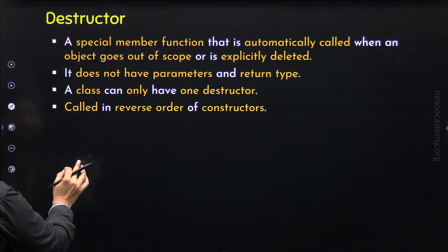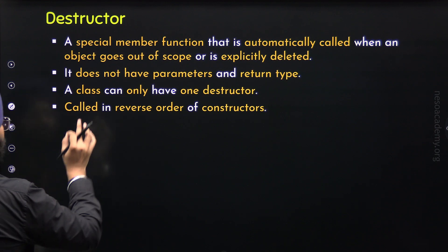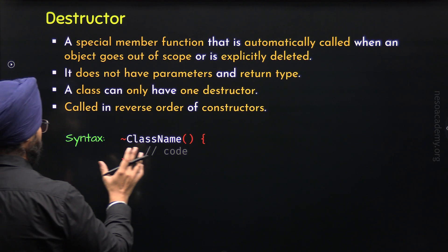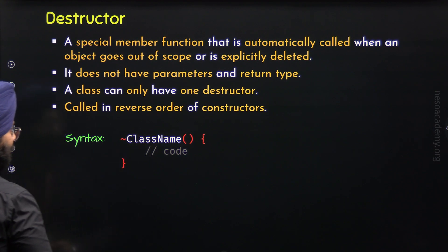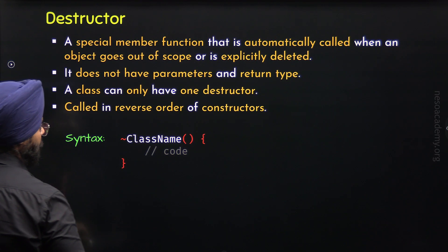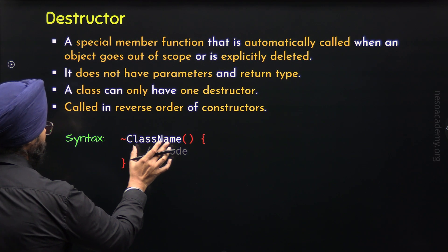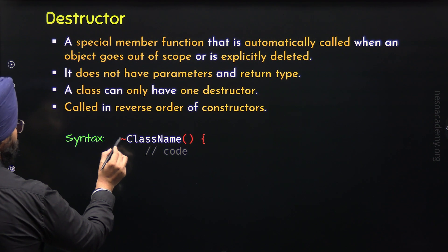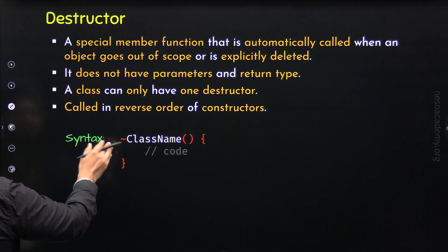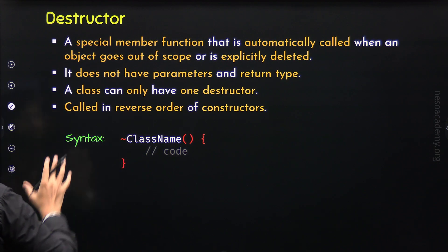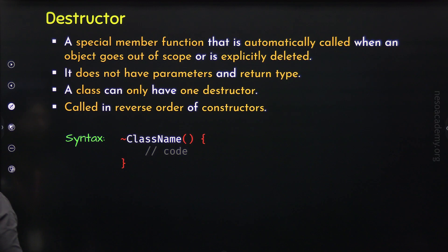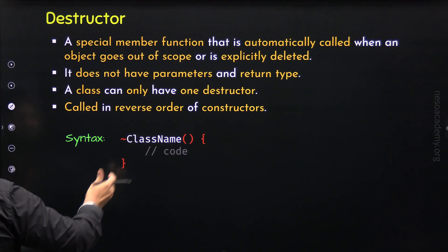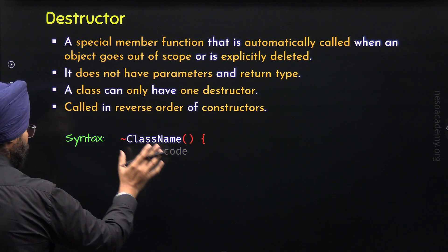Here is the syntax of how to define a destructor in C++. A destructor is defined just like a constructor, but we need to use the tilde symbol in front of the class name — that is the name of the destructor. This symbol differentiates it from a constructor. Also, we cannot provide parameters within parentheses. Within braces, we can provide the code for the destructor.